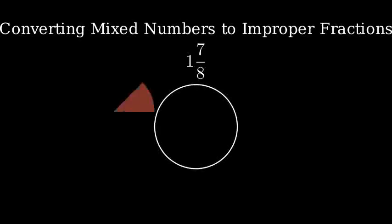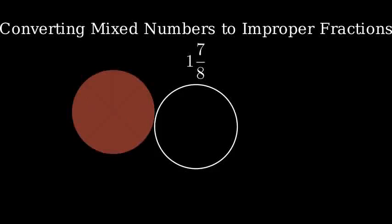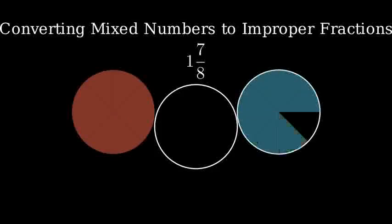First, we have one whole circle which can be divided into 8 equal parts, plus 7 eighths of another circle.